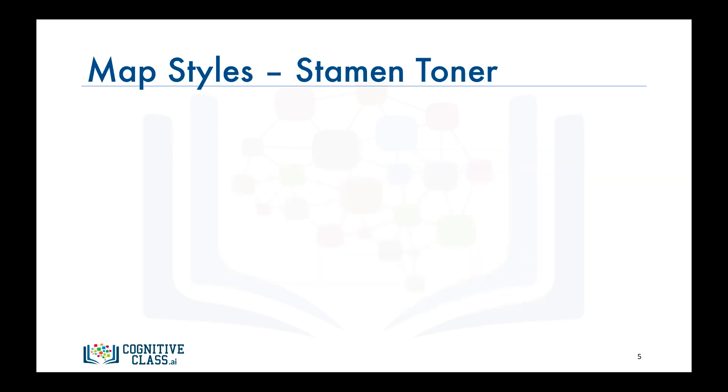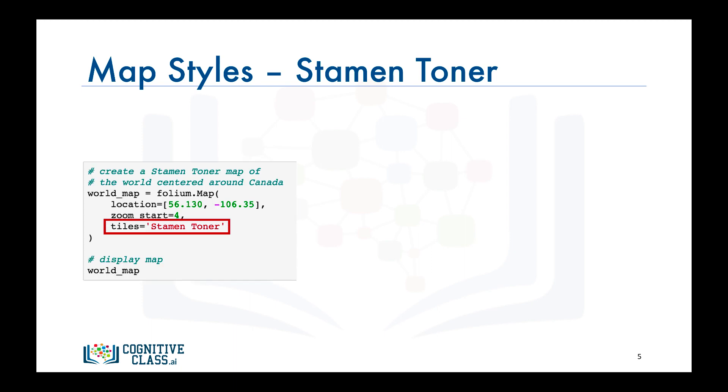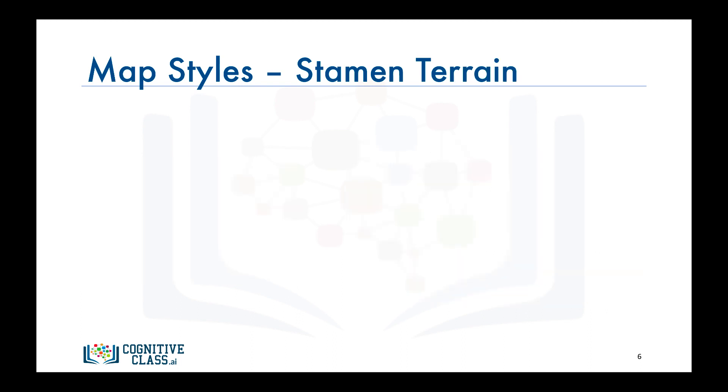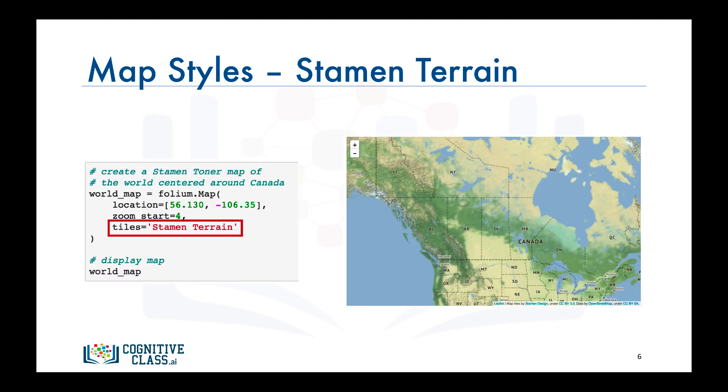Another amazing feature of Folium is that you can create different map styles using the tiles parameter. Let's create a stamen toner map of Canada. This style is great for visualizing and exploring river meanders and coastal zones. Another style is stamen terrain. Let's create a map of Canada in stamen terrain. This style is great for visualizing hill shading and natural vegetation colors.